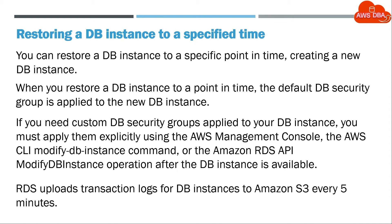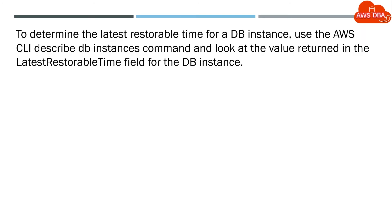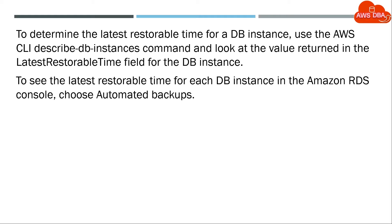RDS uploads transaction logs for DB instances to Amazon S3 every 5 minutes. To determine the latest restorable time for a DB instance, use the AWS CLI Describe DB Instances command, and look at the value returned in the Latest Restorable Time field for the DB instance. To see the latest restorable time for each DB instance, in the Amazon RDS console, choose Automated Backups.